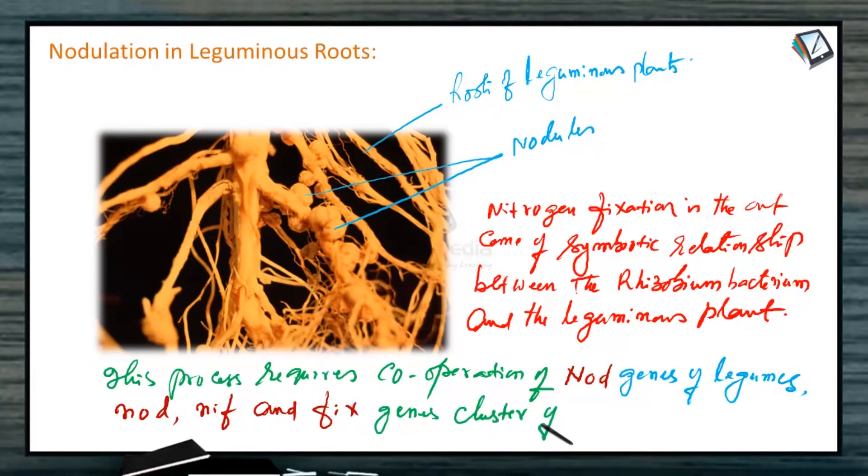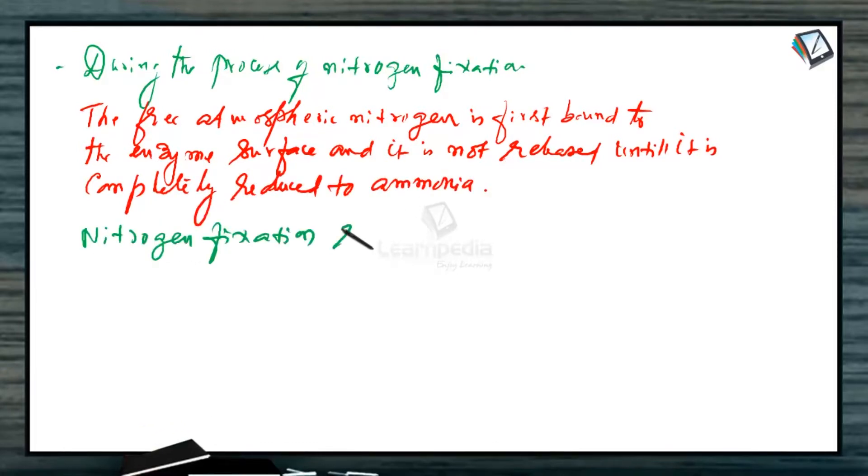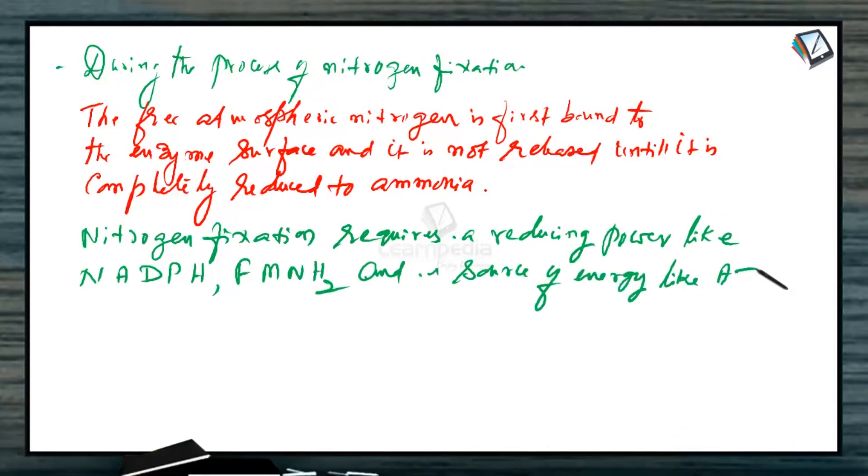During the process of nitrogen fixation, the free atmospheric nitrogen is first bound to the enzyme surface and it is not released until it is completely reduced to ammonia. Nitrogen fixation requires a reducing power like NADPH, FMNH2 and a source of energy like ATP and of course the enzyme nitrogenase.